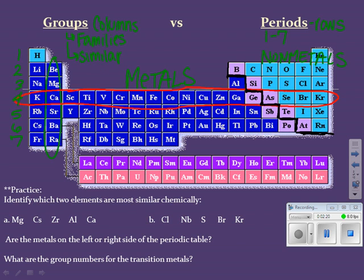You'll notice the elements right on the stair step line are a different color. There's a reason for that — these are what we call the metalloids. We call them metalloids because they have characteristics of both the metals and the non-metals. So make sure we keep that in mind.